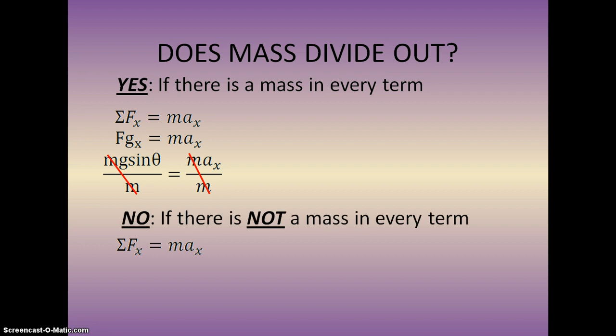However, if there's not a mass in every term, the mass does not divide out. Maybe there's a 50 newton force pushing it down an incline. If you divide all these things by mass, you're left with g sine theta plus 50 over m equals a_x, which is sort of pointless. So please be careful with that. Don't just slash and burn the mass. Everybody seems to do it in the years past. They just start crossing out mass. Please be careful. Divide every term by mass.